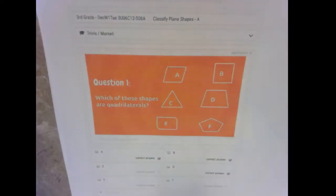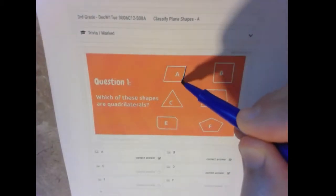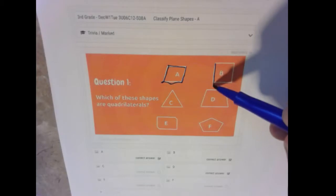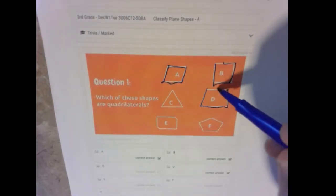So quadrilaterals are any shape that has four sides. So one, two, three, four. One, two, three, four. One, two, three, four.